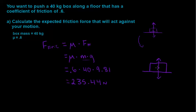And the friction force is going to push against our movement back this way. So we have a magnitude of 235.44 newtons. And that is it for part A.